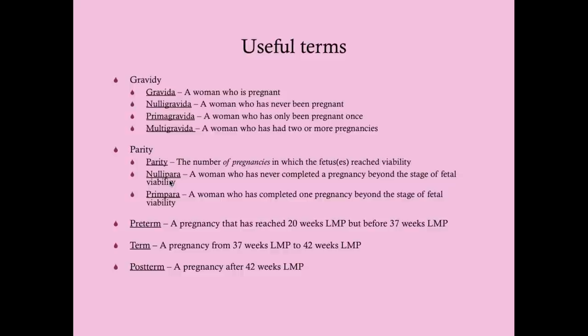A nullipara is a woman who has never completed a pregnancy beyond fetal viability — she could have been pregnant many times but if all resulted in spontaneous abortions at nine weeks, she is still a nullipara. A primipara has completed one pregnancy beyond viability. A multipara has completed multiple pregnancies beyond viability. These terms are not interchangeable — a multigravida is not necessarily a multipara.